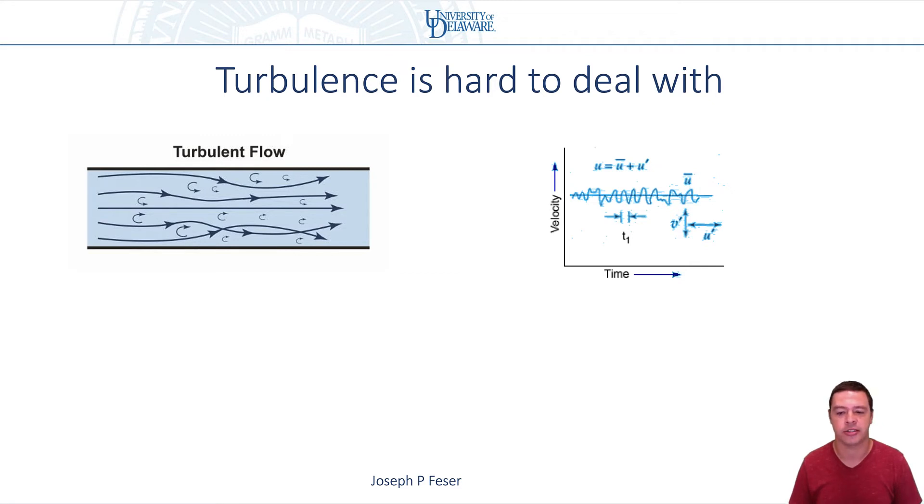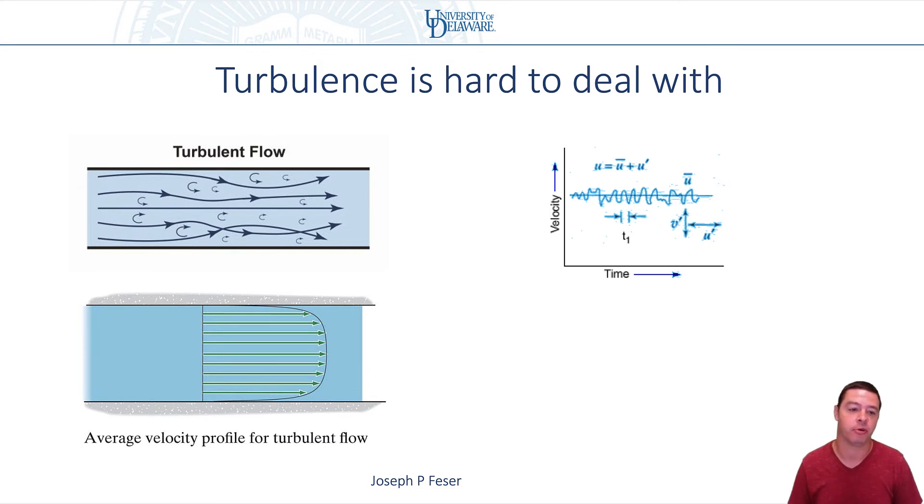And so the way that people typically deal with this, honestly, is just by taking a time average. So we won't even attempt to figure out what the actual exact flow pattern looks like. Our best hope, which is actually still semi-empirical, is to try and find the average velocities at any particular point. So even though there's a turbulent flow and at any given time the velocities are doing crazy things, what we'll try and do is at every point in the flow we'll try and find the time averaged velocity.